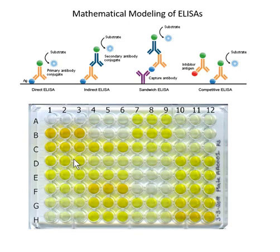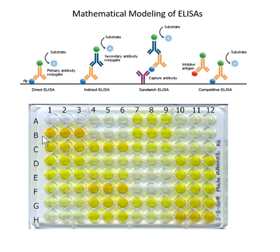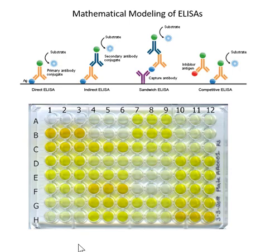So the question is: how do we quantitate this mathematically? What's the mathematical model that can explain this binding event, and how do we analyze the data? The data will be absorption values on the y-axis versus the amount of antibody in our sample on the x-axis.